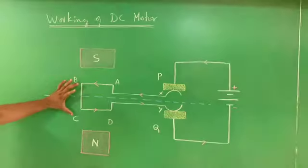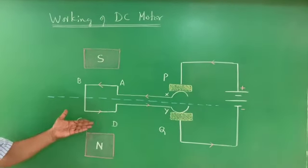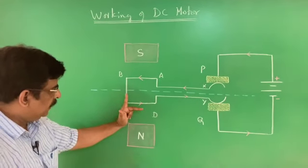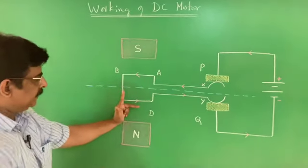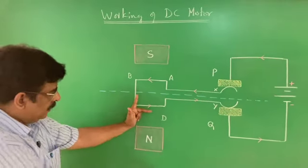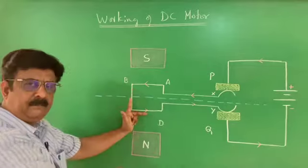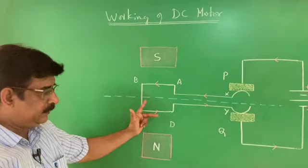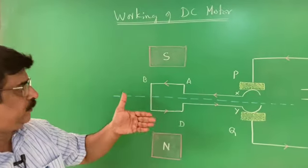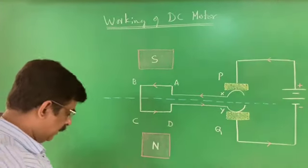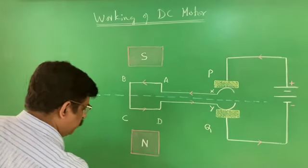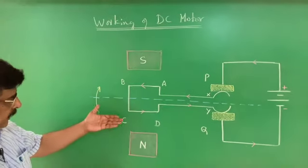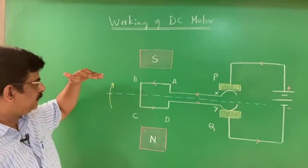AB is moving away from you, so CD is coming towards you. If I apply Fleming's Left Hand Rule to CD — the middle finger shows the direction of electric current and the four fingers indicate the direction of the magnetic field — the thumb indicates CD is moving towards you. Therefore AB is moving away from you and CD is coming towards you, and the armature rotates in this direction.